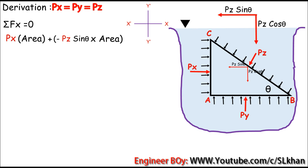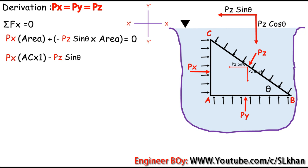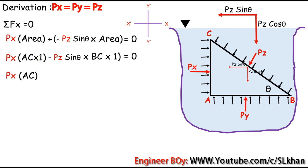The summation of forces in X direction must be zero. The area for PX is AC times unit thickness, which we assume as one for easy calculation. So we get: PX times AC minus PZ times BC times sine theta equals zero. This is equation one. We now have pressure intensity in the X direction and the Z direction.